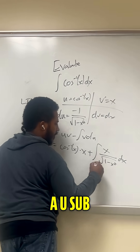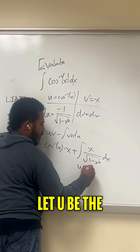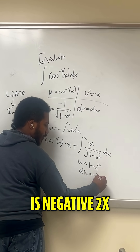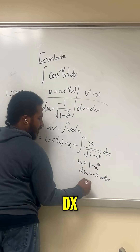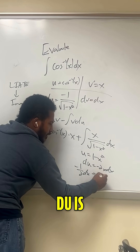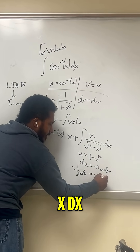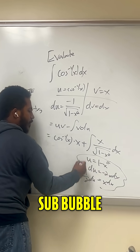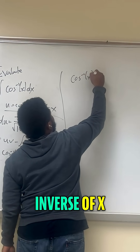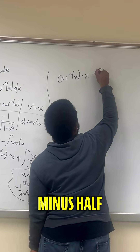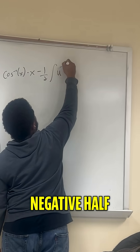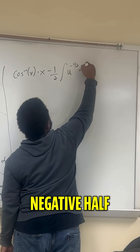It's easier to integrate because this is just a u-substitution. Let u be the inside, 1 minus x squared, then du is negative 2x dx. In other words, negative half du is x dx. There's our substitution. So we get cosine inverse of x times x, minus half the integral of u to the negative half, du.